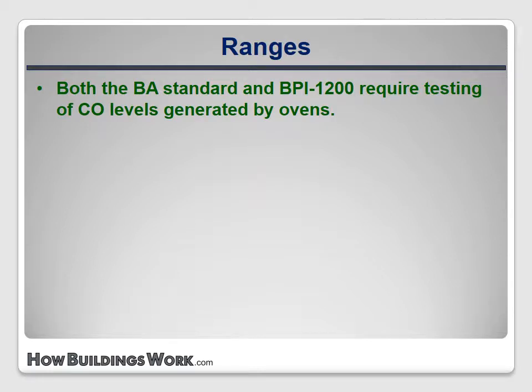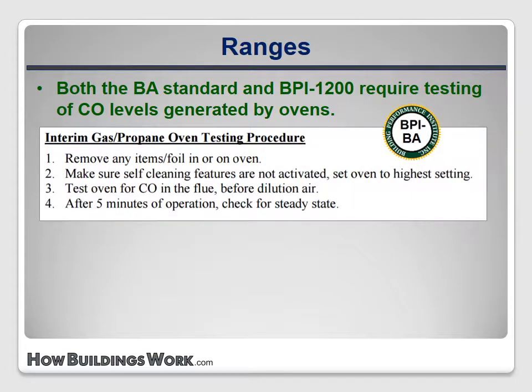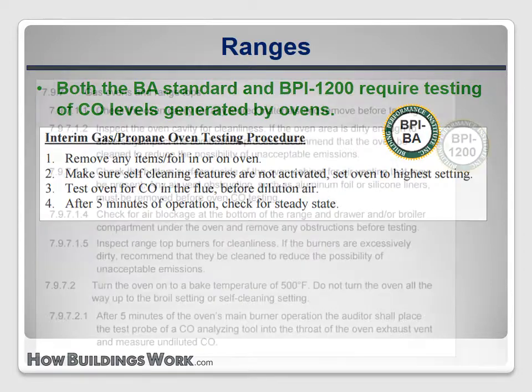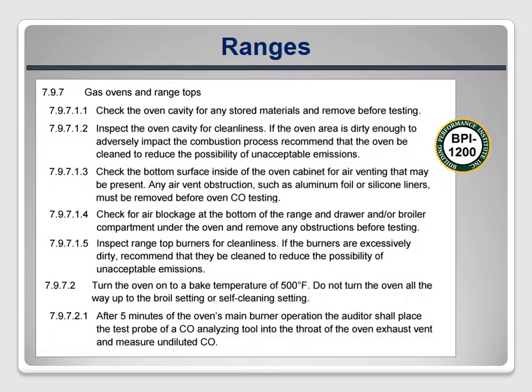Both standards require testing of ovens to determine how much carbon monoxide they generate. The procedure in the Building Analyst Standard is simple and straightforward, while the procedure in BPI 1200 is a bit more detailed but the process is very similar. In both standards, the oven cavity must be checked for debris and the CO level checked at the flue after five minutes of operation at a high temperature setting.